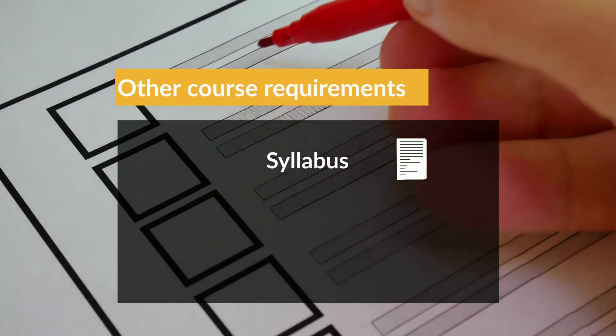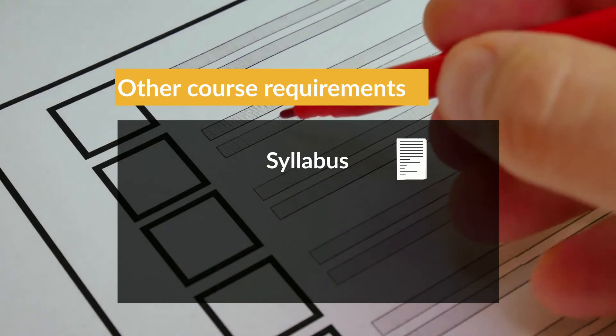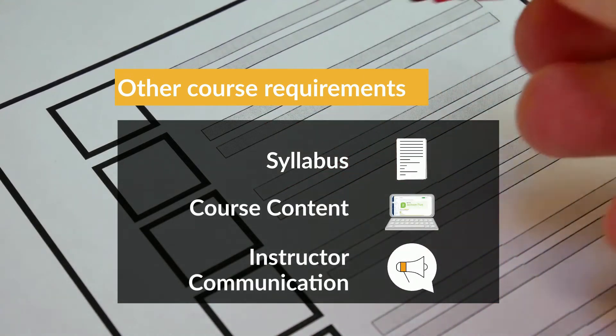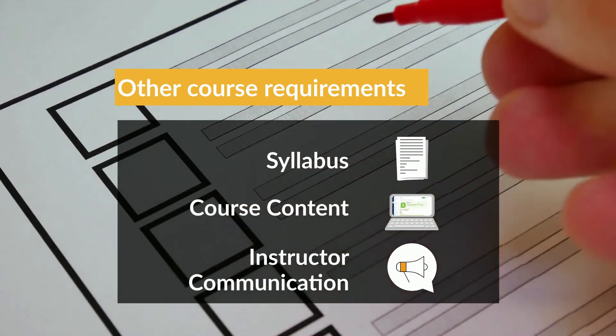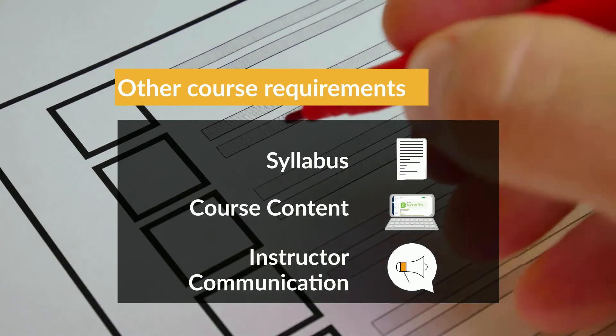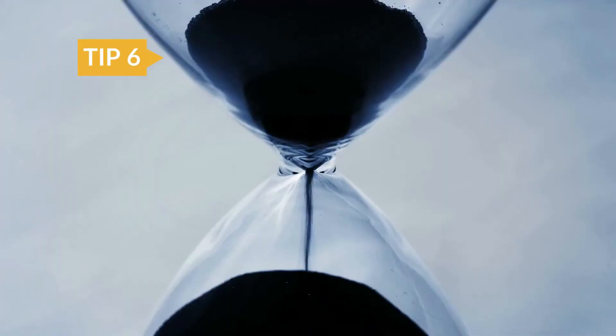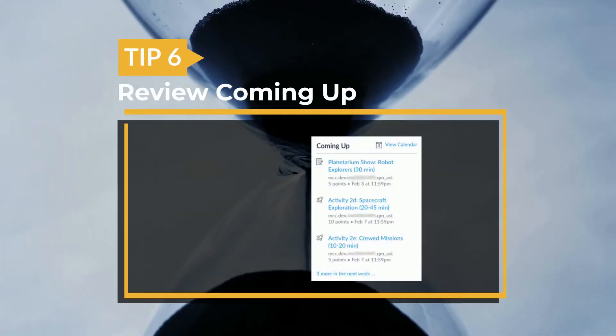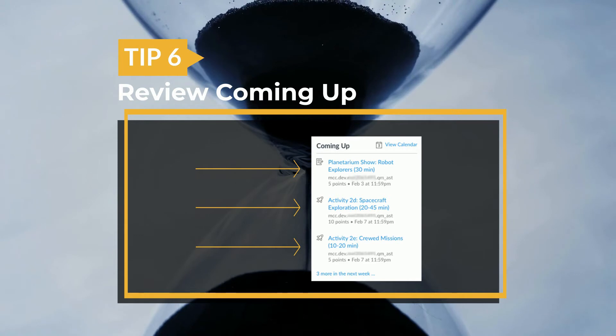It is important not to rely entirely on this list for your course information. Read the syllabus, all other course content, and the communications from your instructor carefully for other requirements. 6. Review "Coming Up" to show your upcoming items from your Canvas calendar.